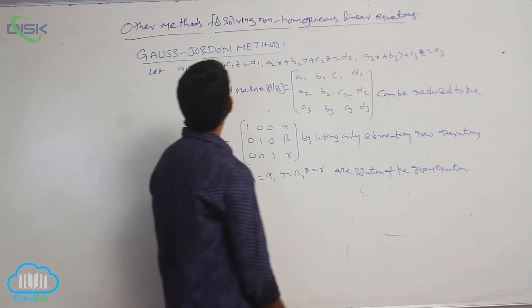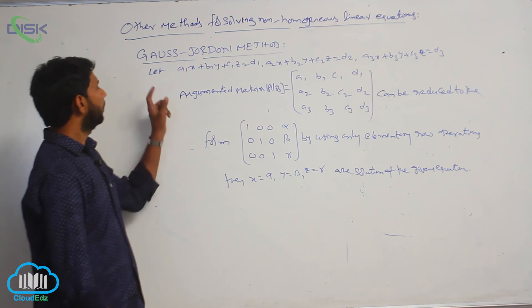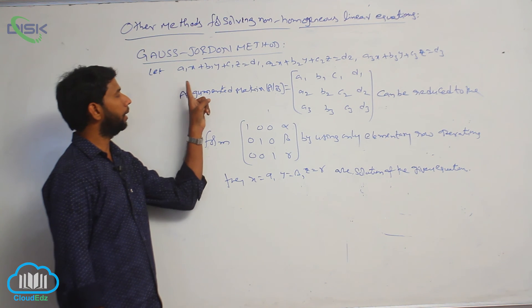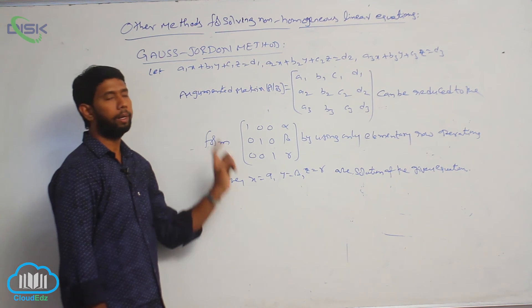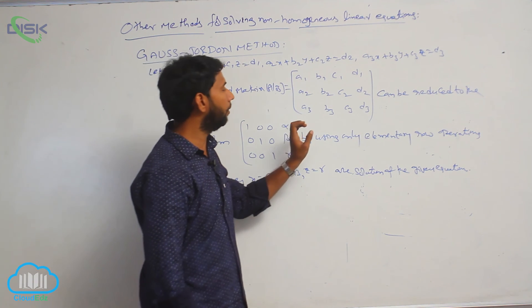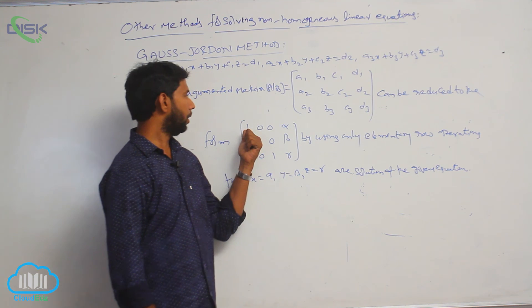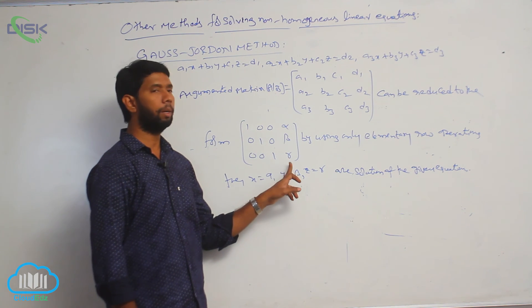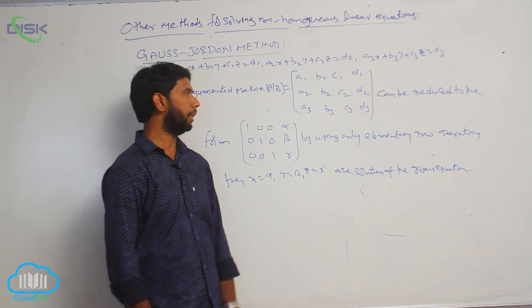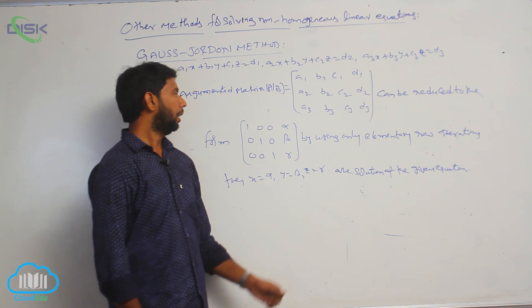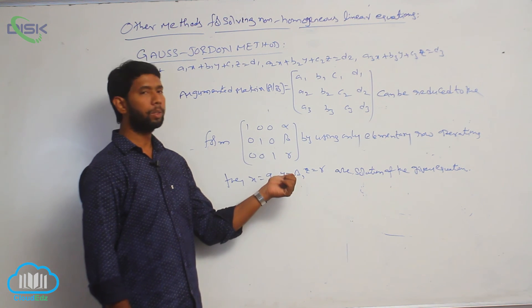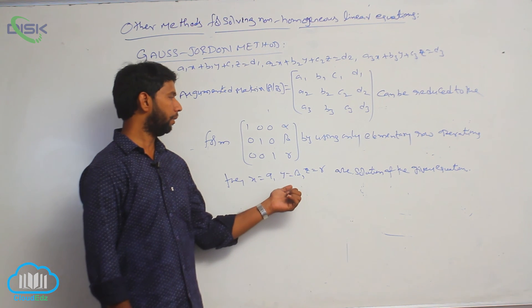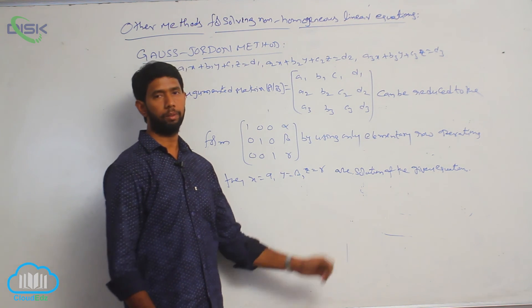This method is called the Gauss-Jordan method. The given linear equations are written in the form of an augmented matrix, which is then converted into the form 1 0 0 α / 0 1 0 β / 0 0 1 γ using only elementary row operations. Here, α, β, γ are the solutions of the equations, that is x = α, y = β, z = γ.